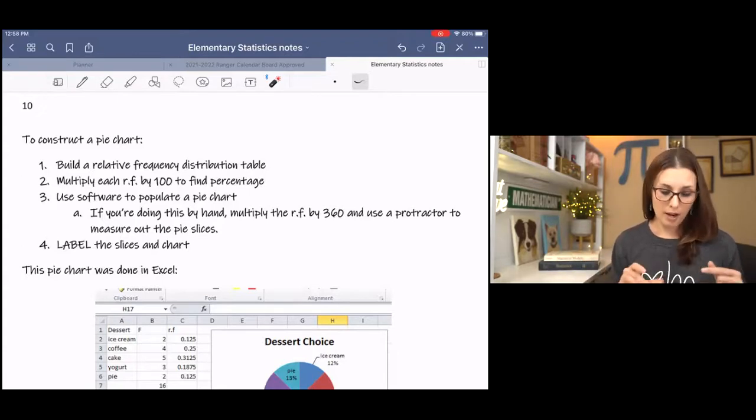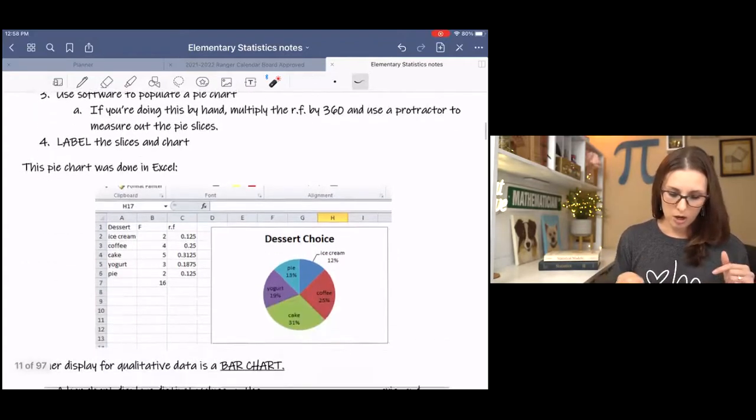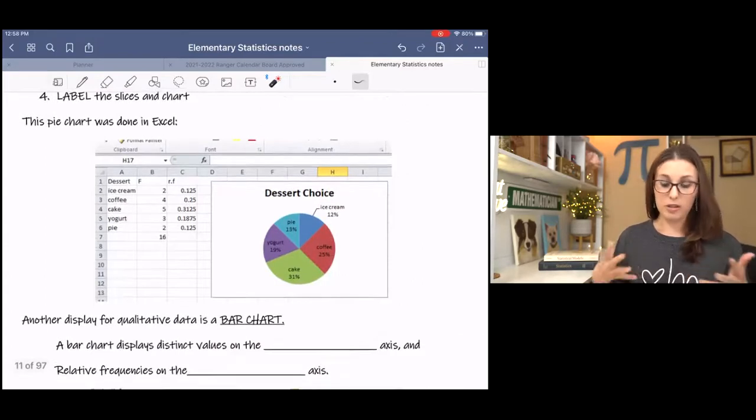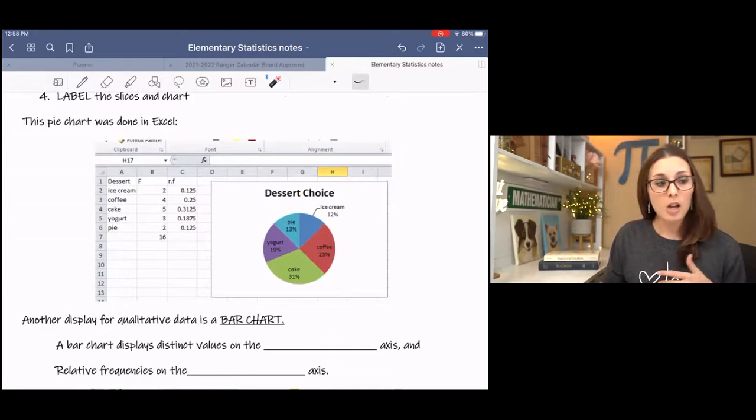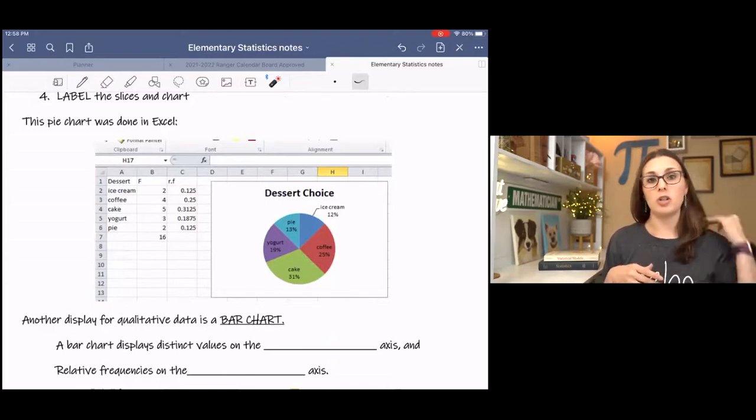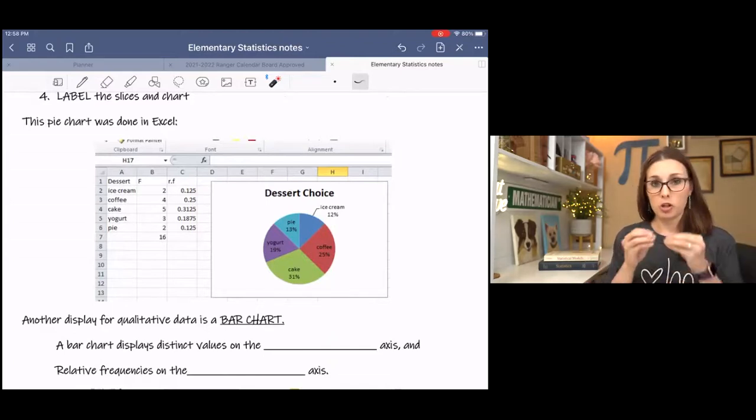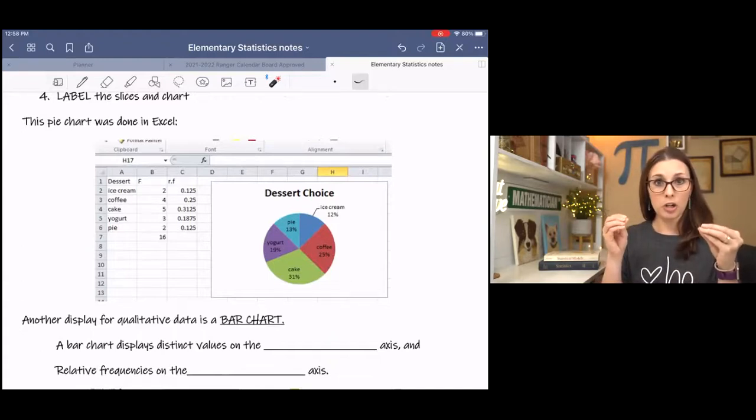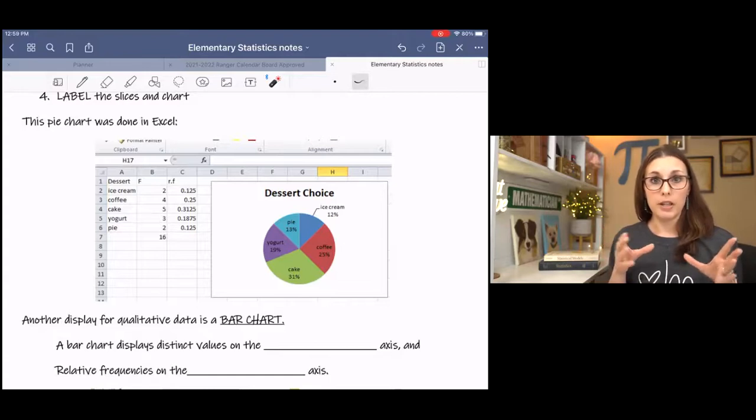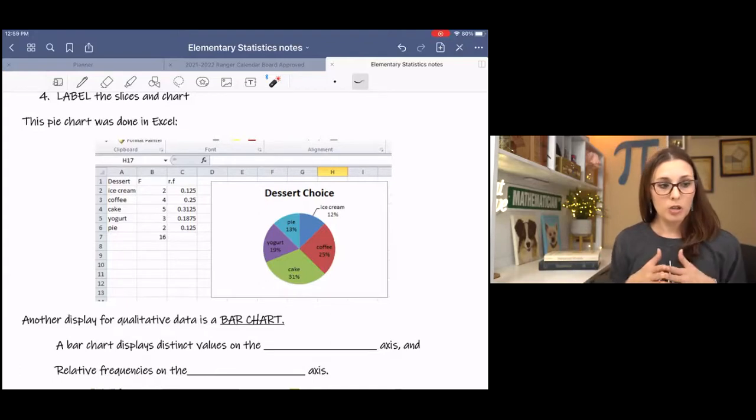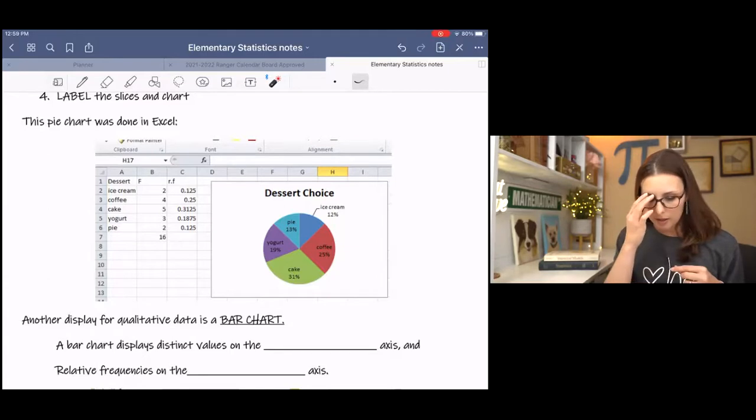If you're not doing it by hand, if you're using software, then you still do your relative frequency table or even just a frequency table, depending on your software. And you can pretty much just pull down a chart and it just populates for you. It's really simple. I am going to walk you through that. I have a picture of what this looks like when it's done. And you can customize this to your heart's content.